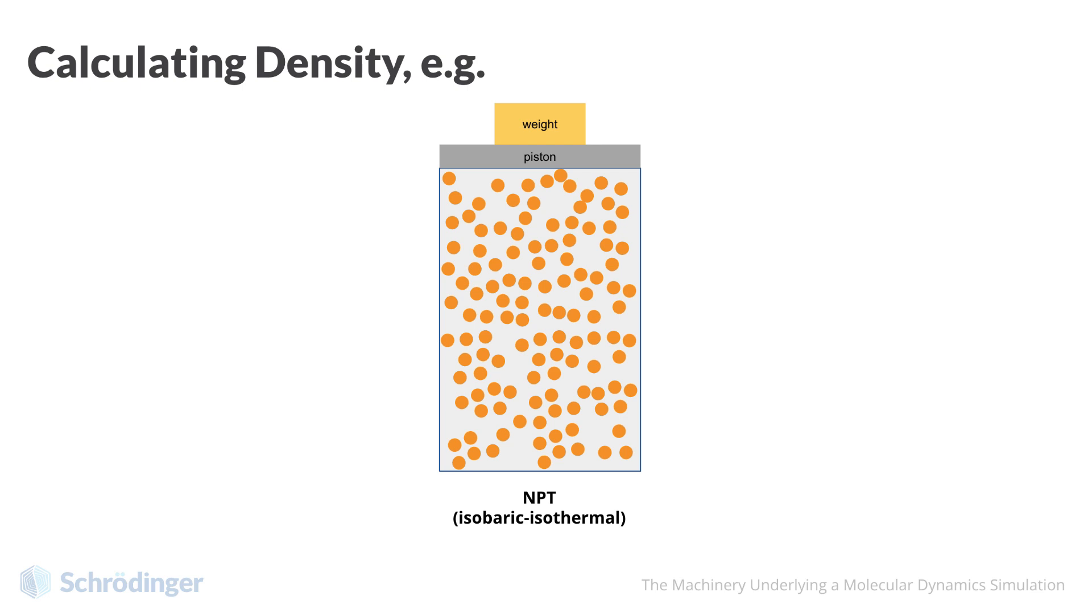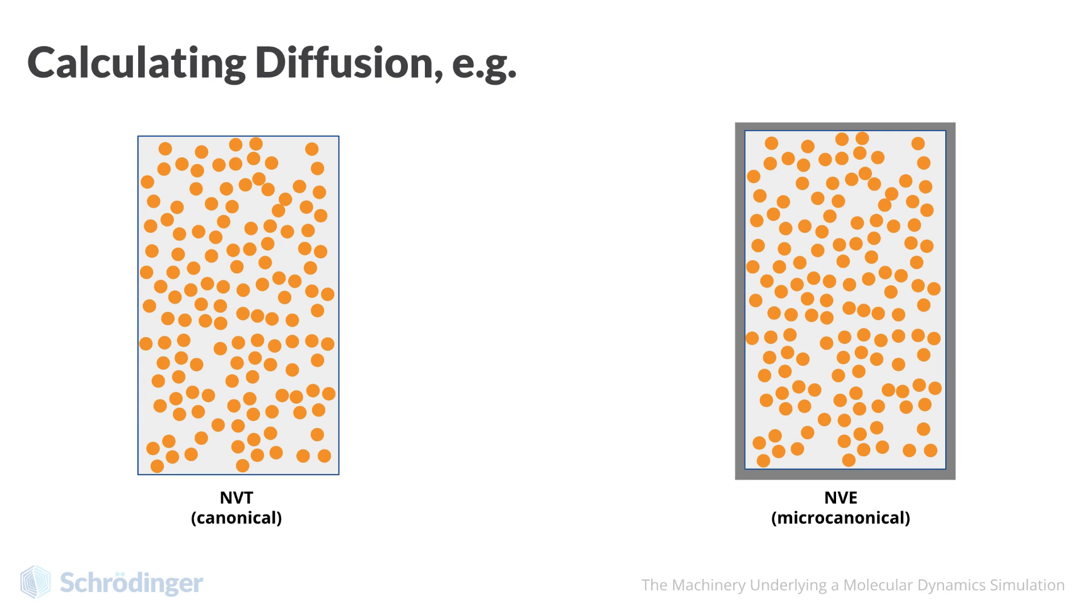In some cases, there is more choice. For example, diffusion can be calculated in NVT or with constant energy in the NVE ensemble. This decision is generally made by exploring common approaches for similar workflows or performing a series of trial calculations.